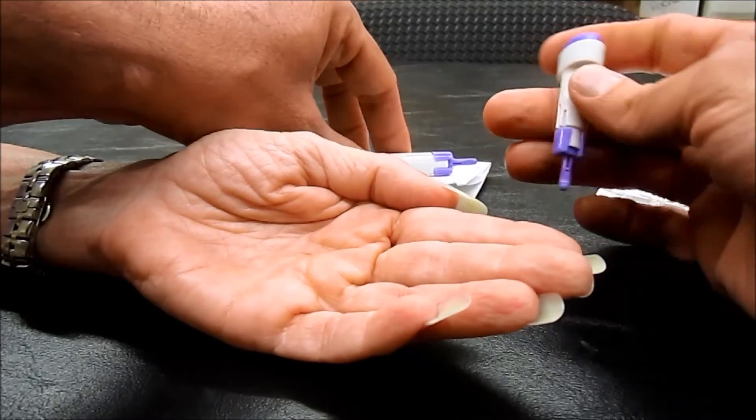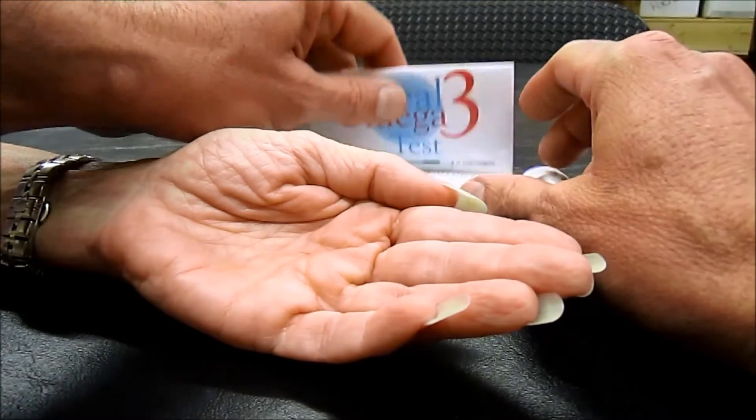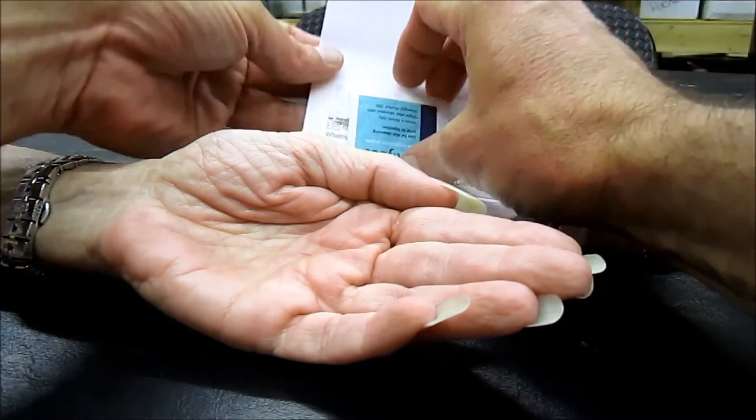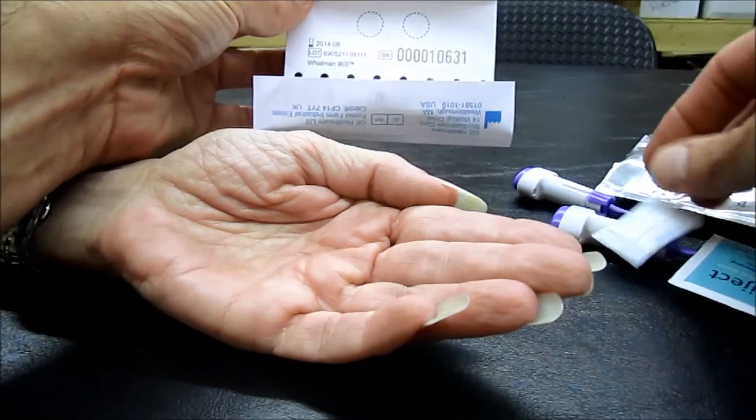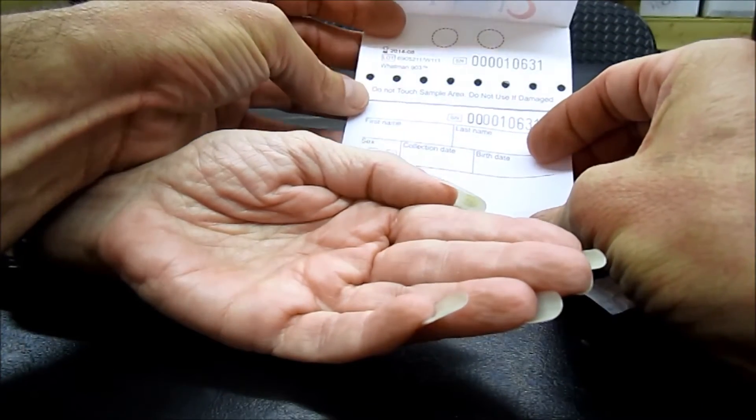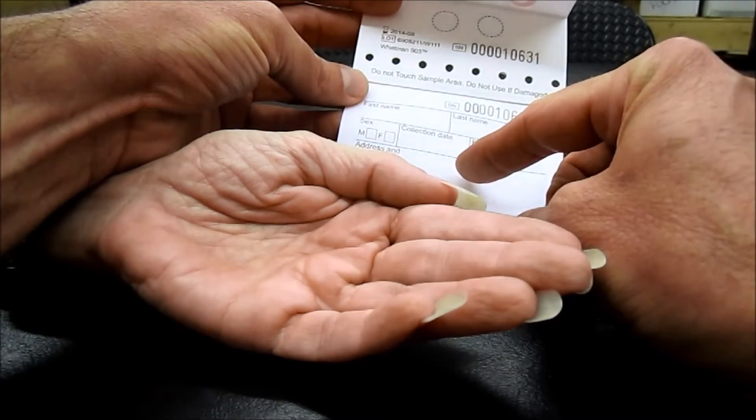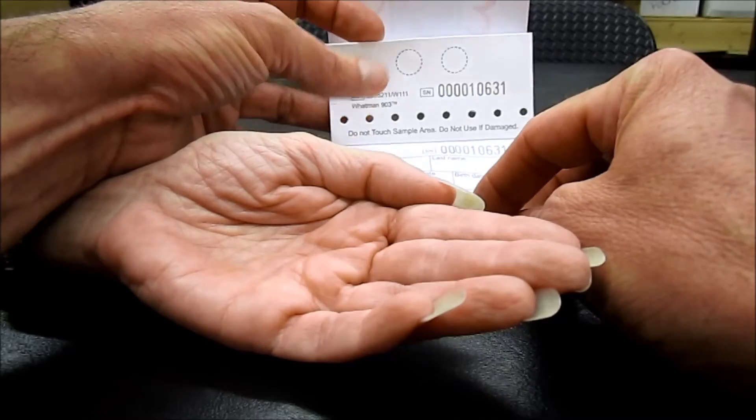These are lancets. These are preloaded and automatic, make sticking your finger very easy. Here is the actual amount of paperwork that you have to fill out. It's your first name, your last name, your date of birth, male or female, collection date, your address, postcode, and your email address, so they can generally email you the results instead of send them.